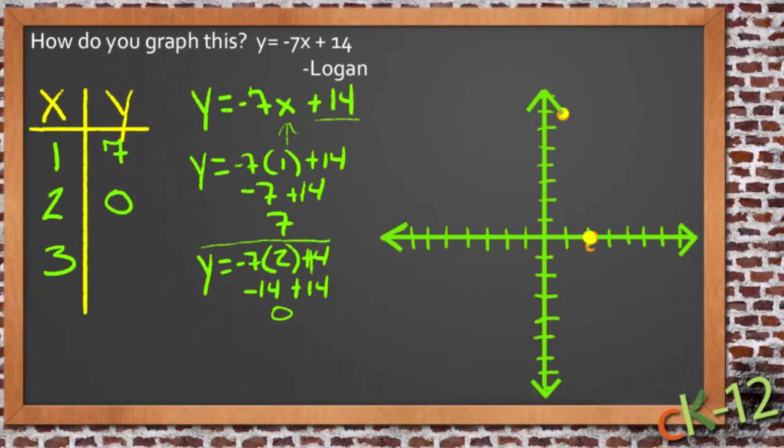Yeah, that shows up a little better. And then finally, we have 3, so we have y equals negative 7 times 3 plus 14. So that's negative 21 plus 14 is going to be negative 7. So we have a point then at x is 3, y is negative 7, which is clear down here.